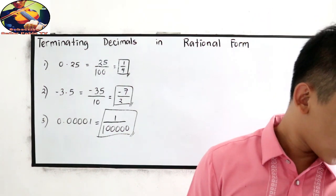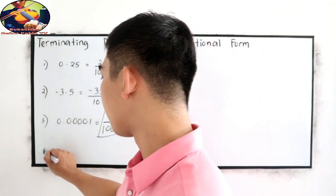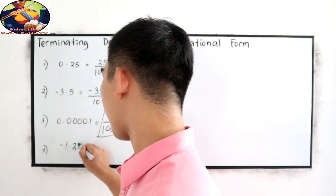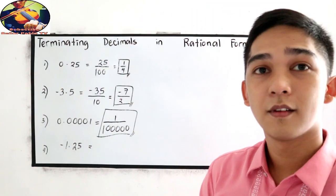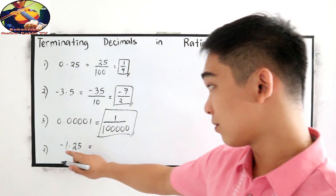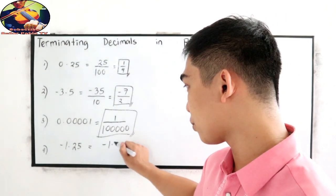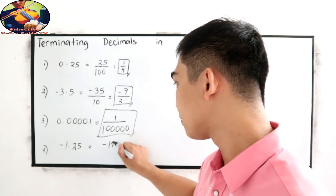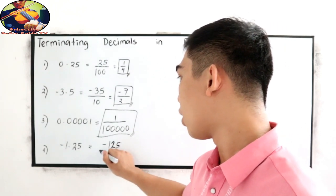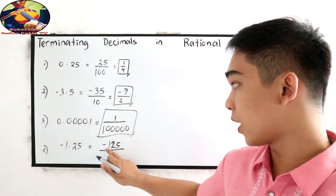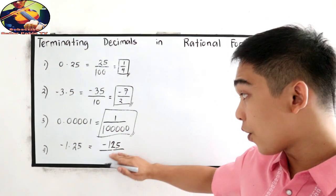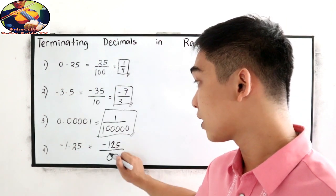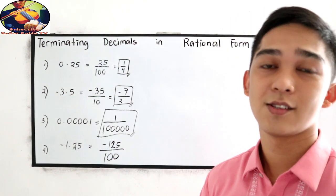What if we have number 4, negative 1.25? So copy negative 1.25 over how many decimal places? 1, 2. So we have 2 zeros. Then write 1. So 100.